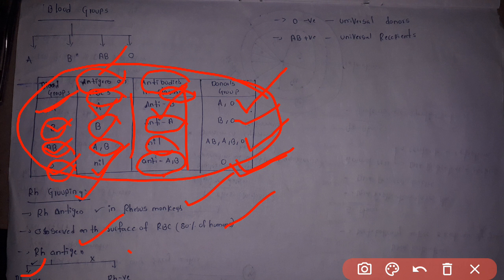If RH antigens are present in humans, they are RH positive. If absent, they are RH negative. For example, A positive blood group has RH antigens and A negative does not. O negative is the universal donor because it has no antigens. AB positive is the universal recipient because it has no antibodies. Thank you.